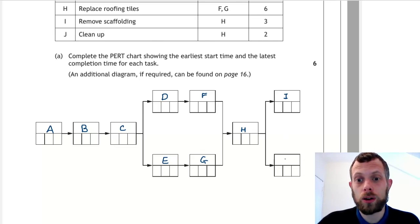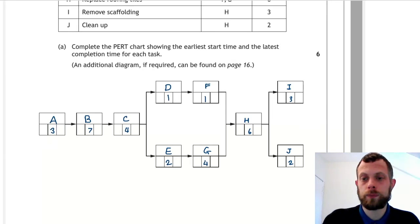Finally, the tasks that depend on H are I and J, and it doesn't matter which one goes in which box. Now we fill in these middle boxes which are the durations. We're going to do the forward scan. We always start at zero. In this case, this means zero hours. Zero plus three is three, three plus seven is ten, ten plus four is 14.